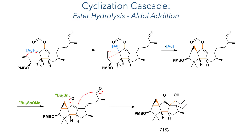These first three steps of the cascade are carried out over 12 hours, and after this time tributyltin methoxide is added. This hydrolyzes the ester, forming a tin alkoxy species that then reacts as an enolate to perform an aldol addition and add to the aldehyde. This cascade was remarkably efficient as it generated four rings and six stereocenters in one single step and produced the target compound in a 71% yield.